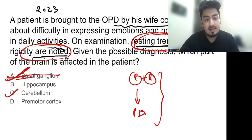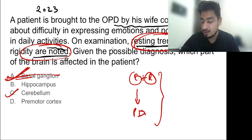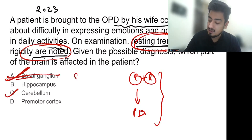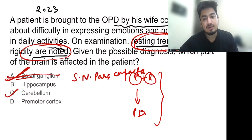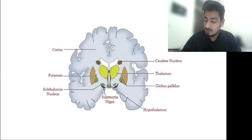Basal ganglia is not just a small thing. It is a group of subcortical nuclei, and the specific part involved in Parkinson's disease is the substantia nigra pars compacta. Let us now discuss basal ganglia in detail.